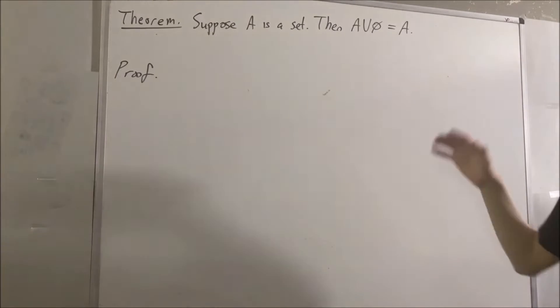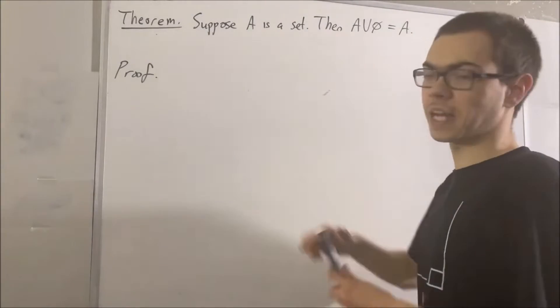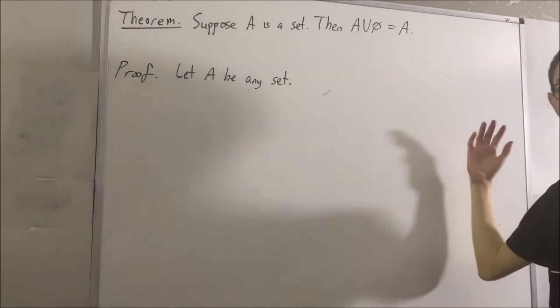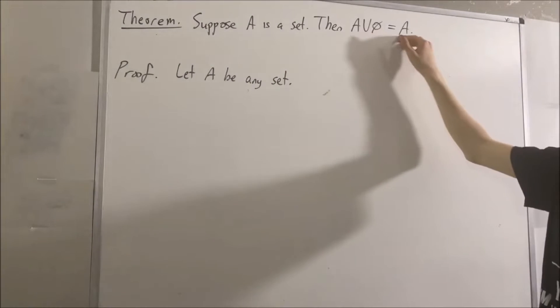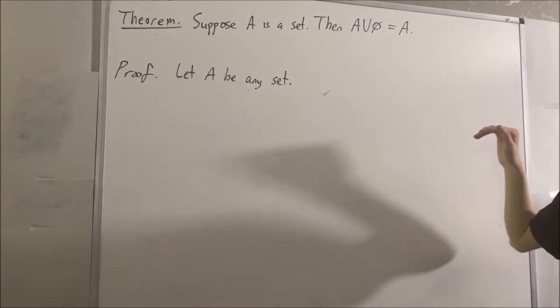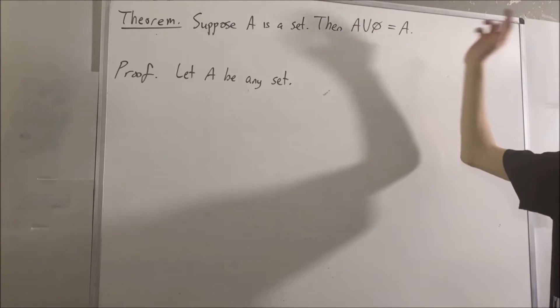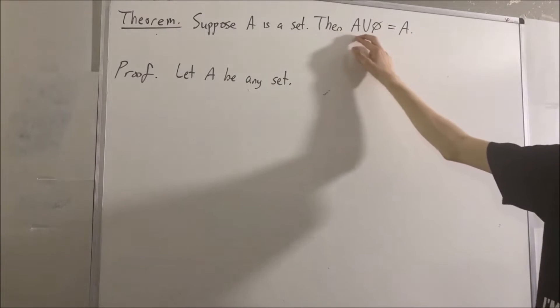Right, so let's start out this proof by supposing A is a set. And now, what we want to do is prove that these two sets are equal. And the way we can do that is we can show that this set is a subset of this set, and that this set is a subset of this set.